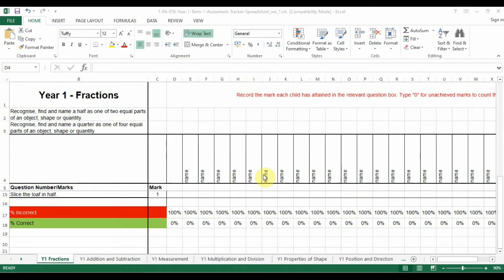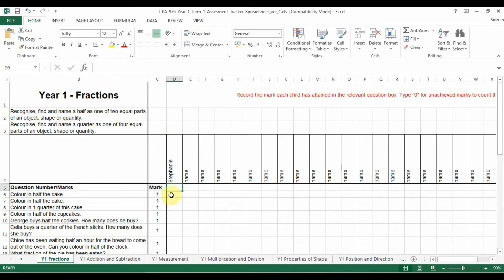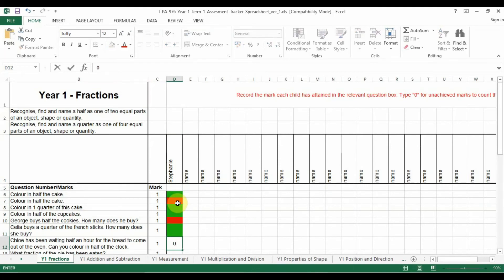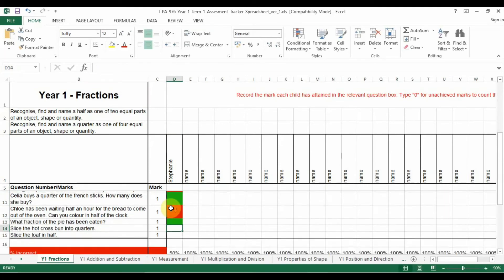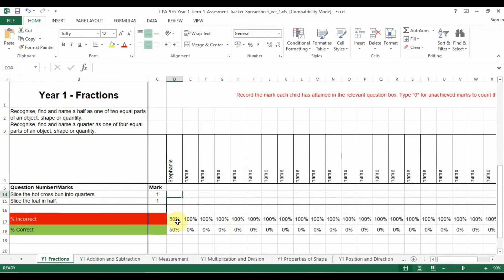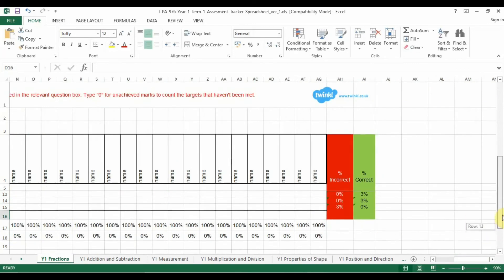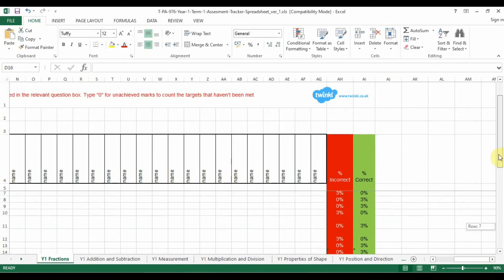This fantastic maths assessment tracker spreadsheet is a brilliant way of tracking your children's progress and assessing how well they are doing at the end of each term. This resource opens up as an editable spreadsheet saving printing time. Add each child's name including their mark. If they score 1 the square will turn green, if you add a 0 it will turn red, giving you a percentage of incorrect and correct answers for each child and an overall percentage of correct and incorrect for each statement.